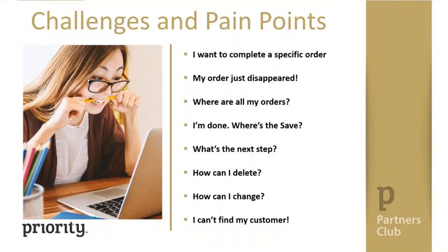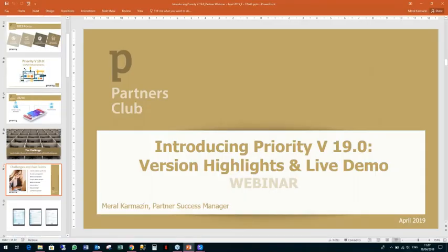Most of the difficulties we saw with new users were around the user interface. After entering a new record, they weren't able to find it. After entering a new sales order, they didn't know what to do next and so on. As a result, our conclusion was that these are the things to take care of in order to improve the user's experience, especially for a new user. In the demo, you'll be able to see how each one of these points was dealt with. An important comment: experienced users used to working in a certain way can continue to work as they do now. So now I will switch to Priority to show you what we're talking about.